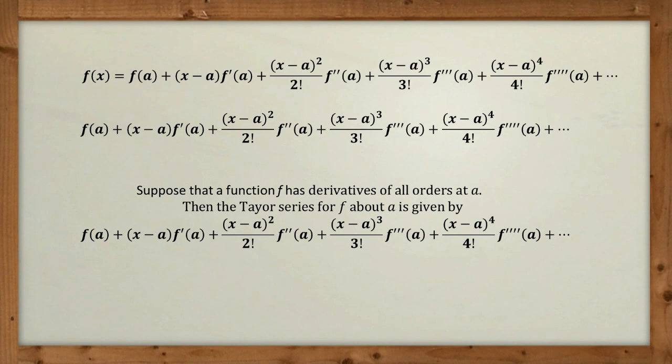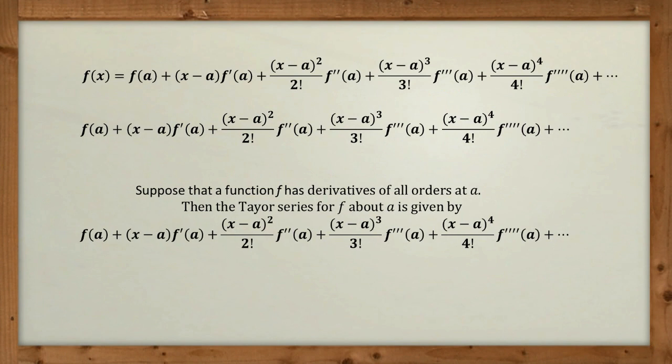Suppose that a function f has derivatives of all orders at a. This just means, all orders at a just means that all these high derivatives exist. Then the Taylor series for f about a is given by the formula that we've got so far. So now we're in a position to solve our exam question.